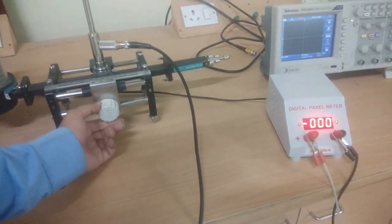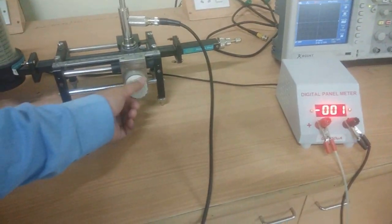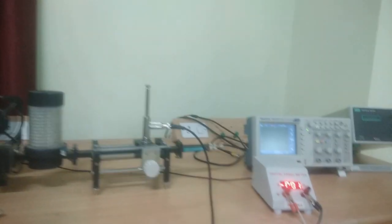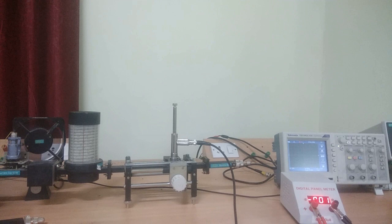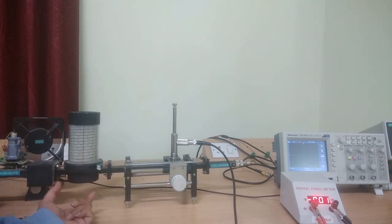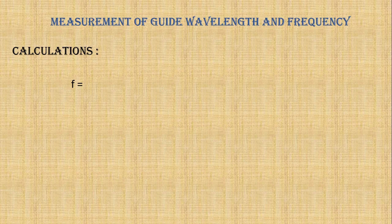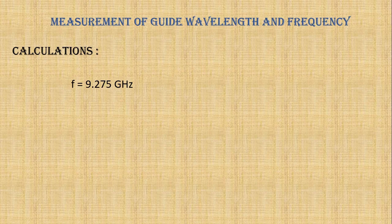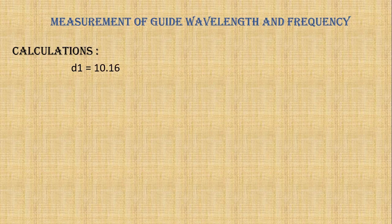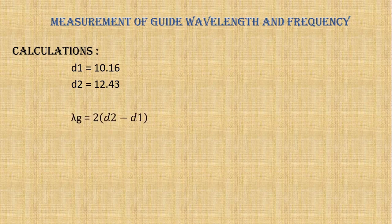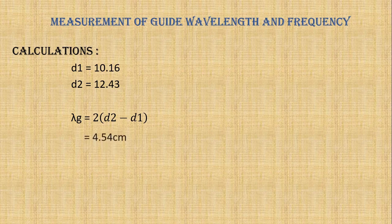In this format, we have to take d1, d2, d3 in centimeters. Now verify the frequency obtained by slotted line section with direct method. We have frequency of 9.275 gigahertz. Coming to the indirect method, we have d1 equal to 10.16 centimeters, d2 equal to 12.43 centimeters. Lambda g equals 2 times (d2 minus d1). By substituting these values, we get 4.54 centimeters.